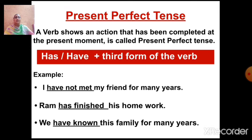'Ram has finished his homework' — it means that the action he has completed just now. Since Ram is singular, we write 'has' and the third form of verb, that is 'finished'. Next: 'We have known this family for many years.' In this sentence, the time factor of the action is not clear, and 'we' is a plural subject, so we use 'have' and the third form of verb, that is 'known'.